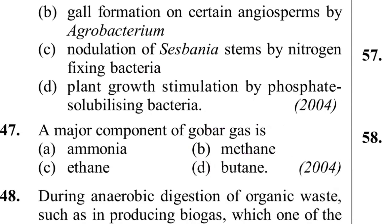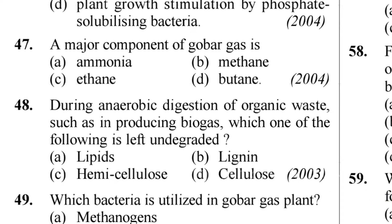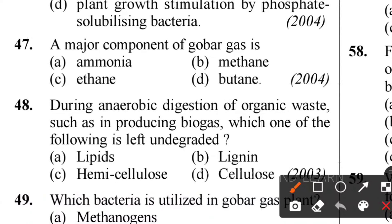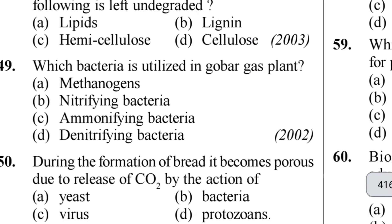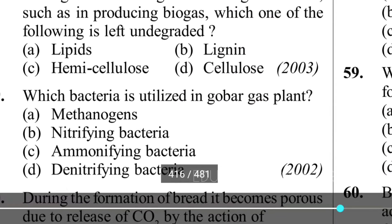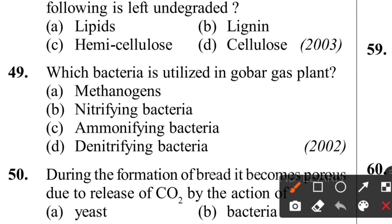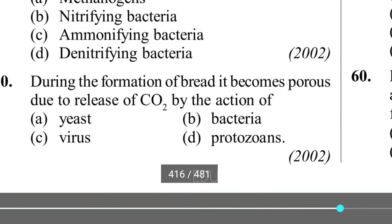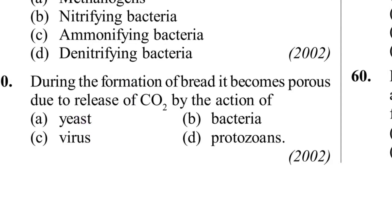Forty-seventh question: the major component of gobar gas is methane. Forty-eighth question: during anaerobic digestion of organic waste for producing biogas, which is left undegraded? The answer is lignin. Lignin is a complex polymer with phenyl propane units which is resistant to microbial degradation. Option B - lignin - is the correct answer. Forty-ninth question: which bacteria is utilized in gobar gas plant? Methanogens - option A is the answer. Fiftieth question: during formation of bread it becomes porous due to release of CO2 by the action of yeast - option A.